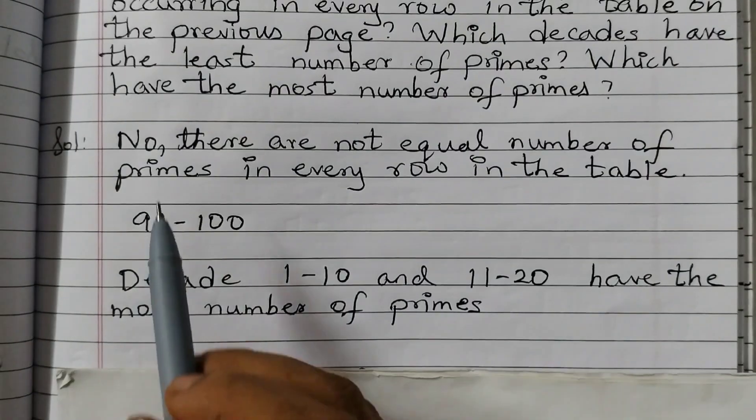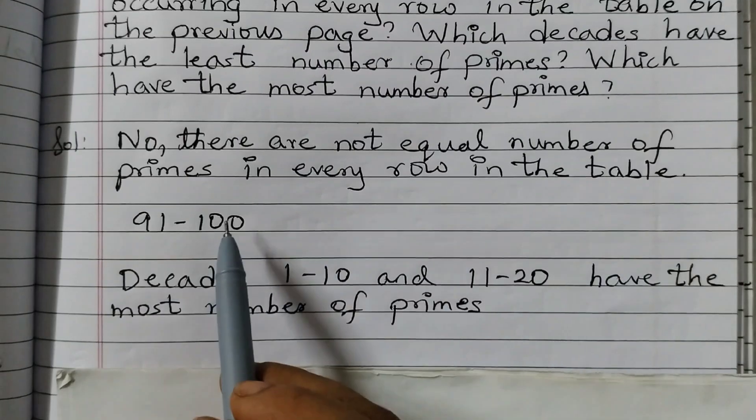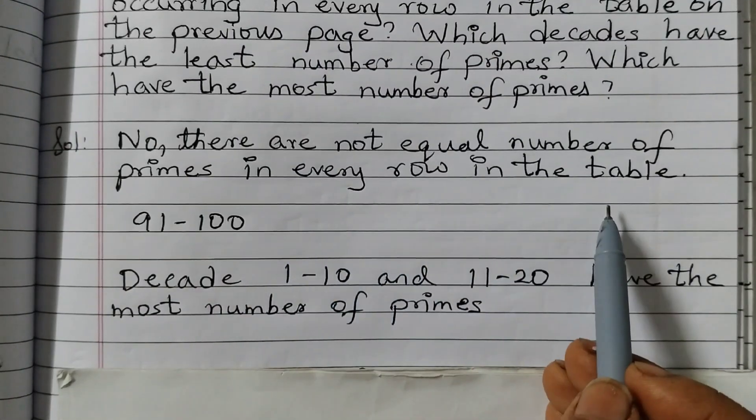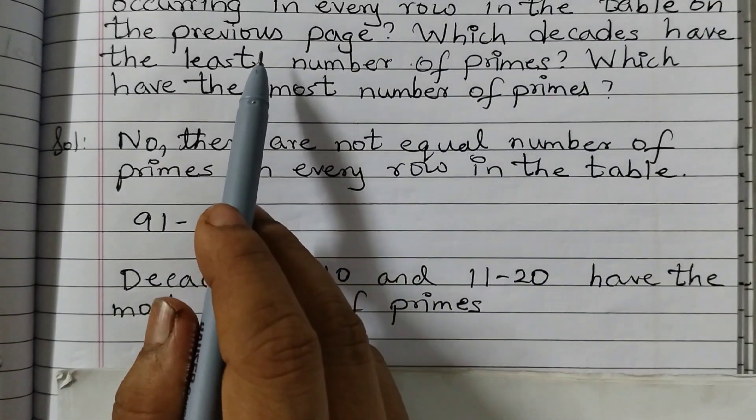So the answer is no, there are not equal number of primes in every row in the table. That is the first answer.